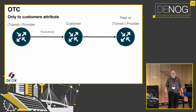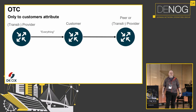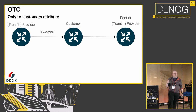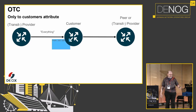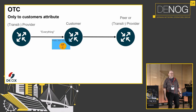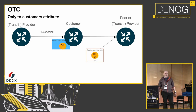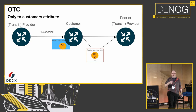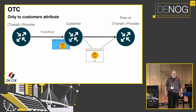You can also tag the prefixes you have received. If you receive something from a transit provider, you might only want to announce that to a customer — you never want to announce it to another transit provider. So you receive a prefix, you put a flag on it called OTC, which means 'only to customer.' And if you accidentally want to announce that to another transit provider, it's automatically blocked. That's automatic filtering using this feature.